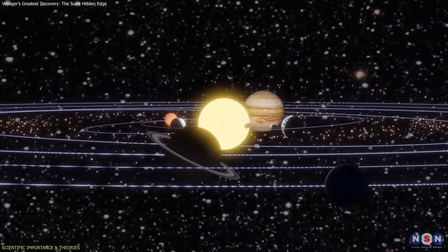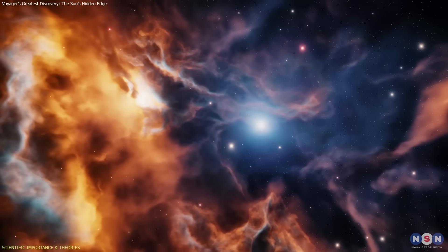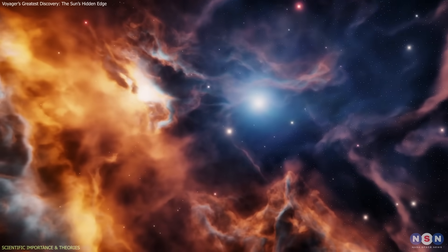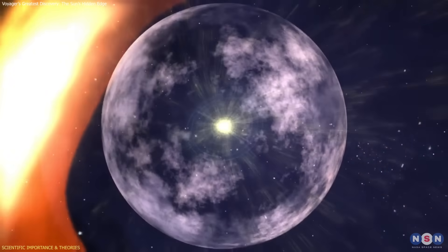These results imply that the boundary between the Sun's influence and interstellar space is not a sharp edge, but a gradual blending zone where magnetic fields intertwine and energy flows continuously between the two regions.